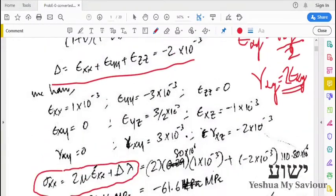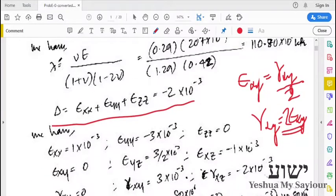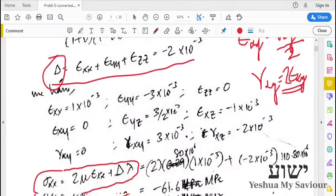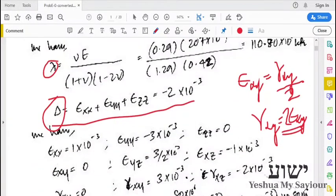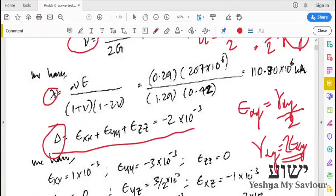You can see that we have to have λ and μ to find out the diagonal components. And for the off-diagonal components, we just have to multiply the engineering strain with the modulus of rigidity. For that, we have λ = μE / (1+μ)(1-2μ), and substituting everything given, we will get 110.8 GPa.